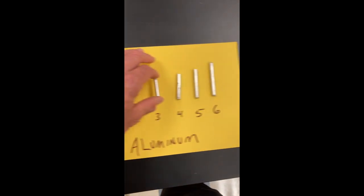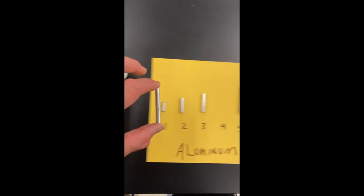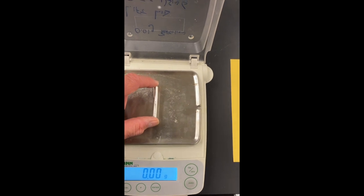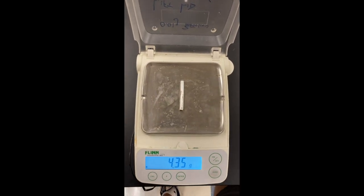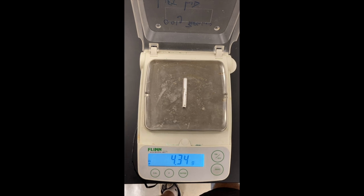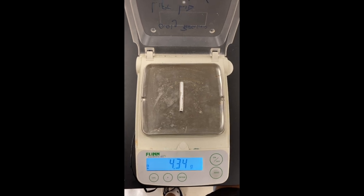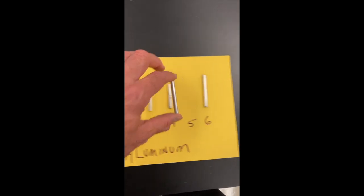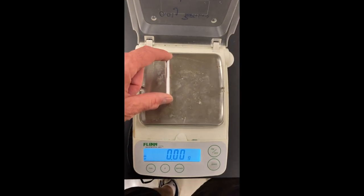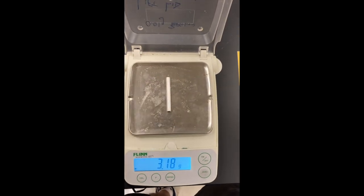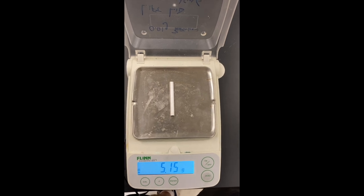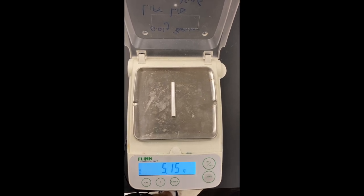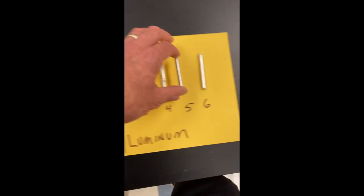Piece number four. If at any point I'm moving too fast, feel free to pause the video, but this is the mass of piece number four. Get piece number five, check to see our scale is zero. Piece number five has this mass, and last but not least, piece number six.